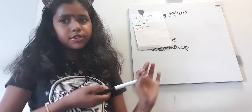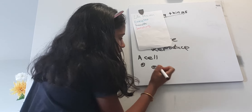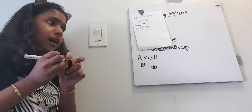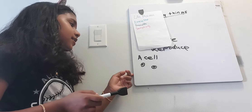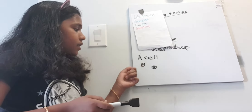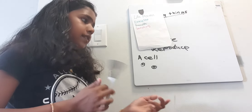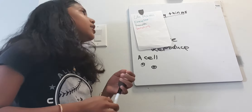Cells are very tiny particles found in your body. Us humans have multiple cells. Bacteria and other simple organisms are called singular-cell organisms — it's because they just have one cell.